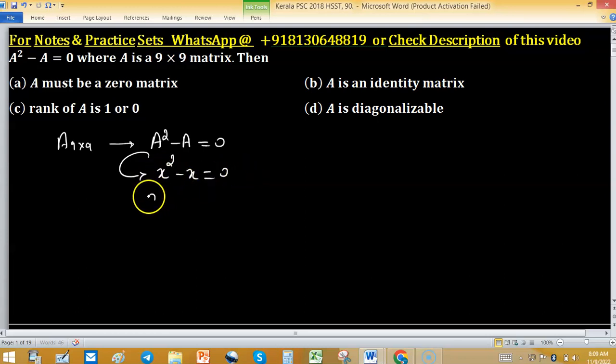So we have x, x minus 1 are factors of this. So if we write minimal polynomial, what are the possibilities of minimal polynomial? x and x minus 1, because these are in linear factor.